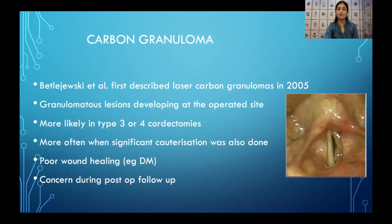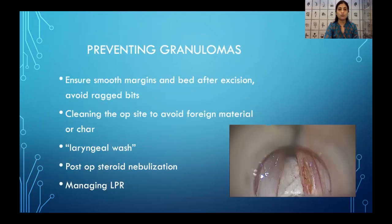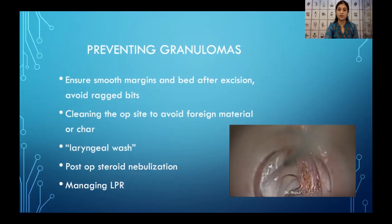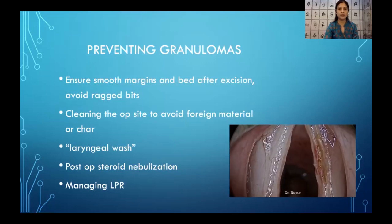A much less critical but very annoying complication with the CO2 laser is called carbon granuloma, first described in 2005. This happens especially after more extensive resections like a type 3 or type 4 cordectomy, where in the post-operative period a granulomatous lesion develops at the operated site — which can be confusing as to whether it is a recurrence or a healing granuloma. This happens more when a lot of cauterization has been done, common in malignancy surgeries. Ensuring smooth surgical margins after surgery minimizes granuloma development. Dr. Nupur also recommends a laryngeal wash — similar to what is done in endoscopic sinus surgery — to wash away all char and foreign particles. Post-operatively, steroid nebulization is also a good idea to minimize granuloma formation.